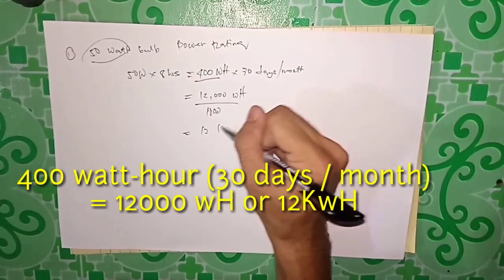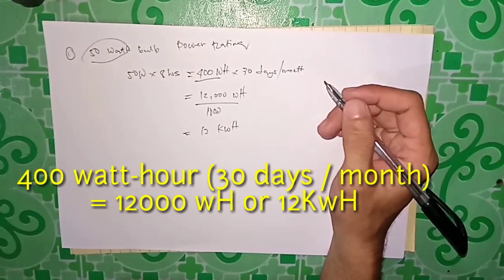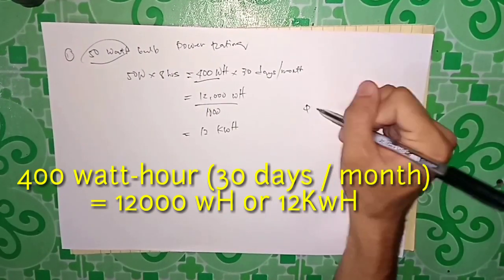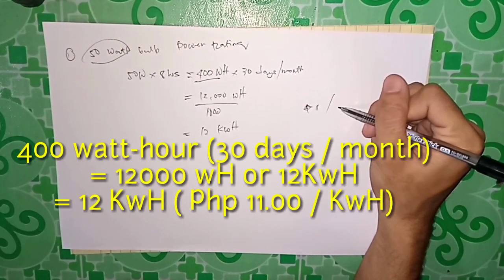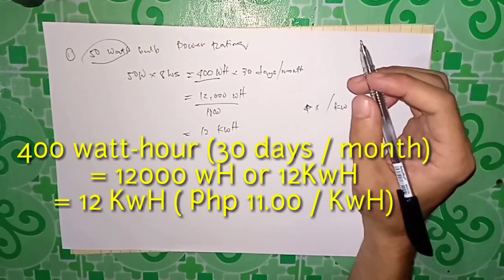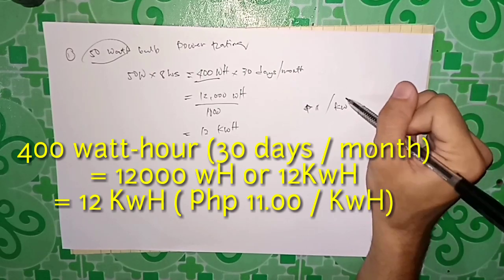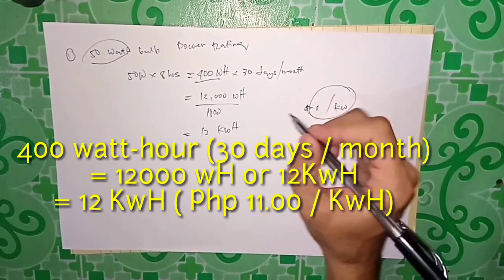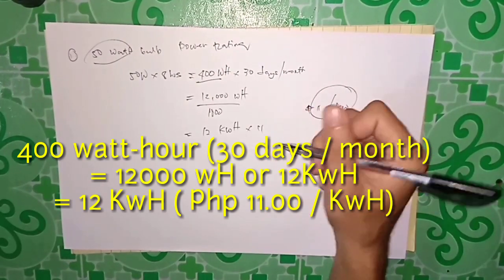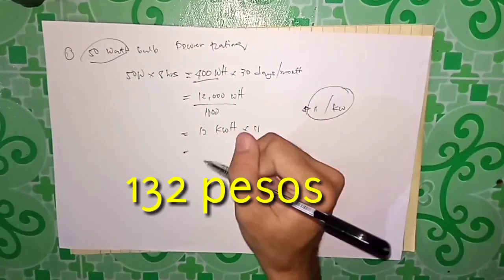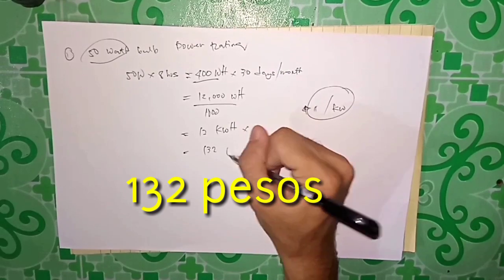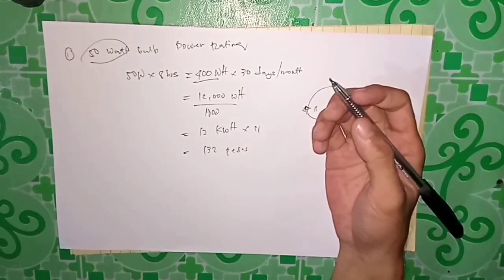12 kilowatt-hour. Since we use kilowatt in our electric bill, just divide 12,000 by 1,000. Let's say 11 pesos per kilowatt for residential. 12 times 11 for 1 month, you'll pay 132 pesos. That's it.